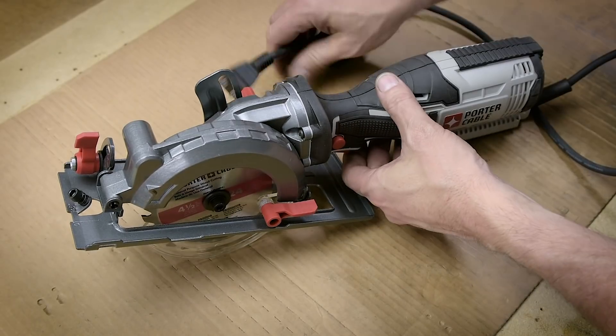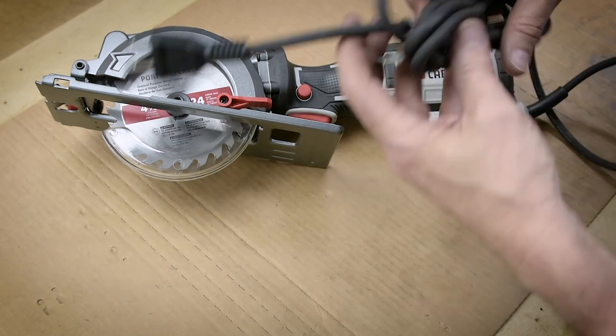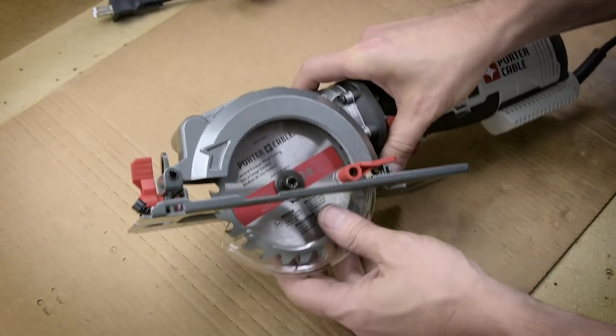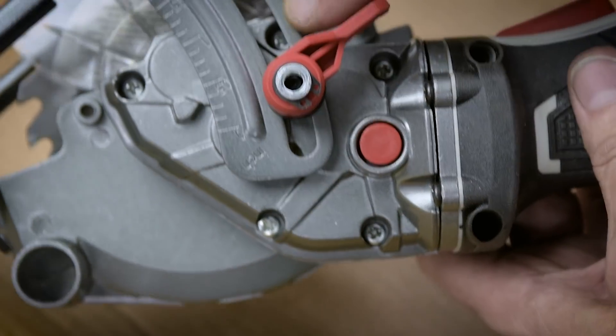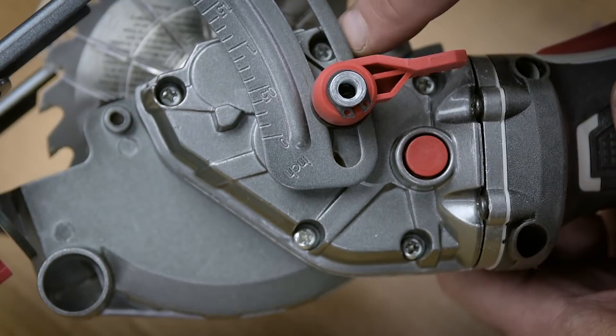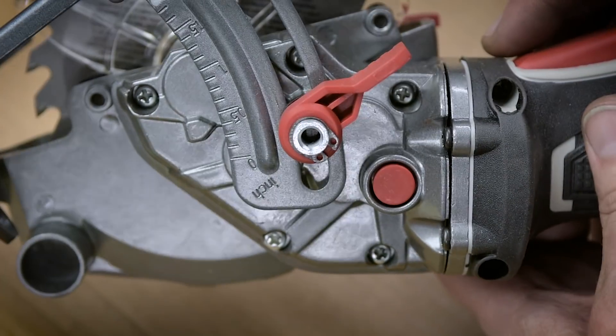As I visualized this saw mounted to my CNC, I also started to imagine all the other things I could do with this besides cut straight lines. I did take a quick look at this in the store before I bought it, and I noticed there were these five screws in the back that went all the way through the gear case.